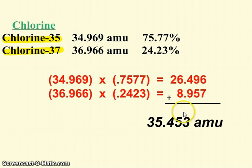And you can tell that the weighted average mass is closer to chlorine-35's mass than chlorine-37's mass, since there's more chlorine-35 on the planet.